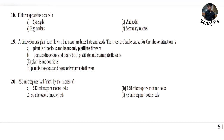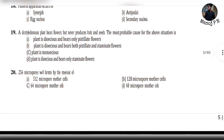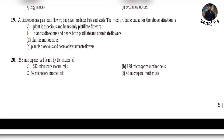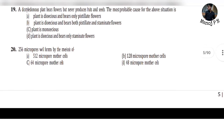Question 19: A dioecious plant bears fruits but never produces fruits and seeds — the answer is option D. The plant is dioecious and bears only the staminate flowers.